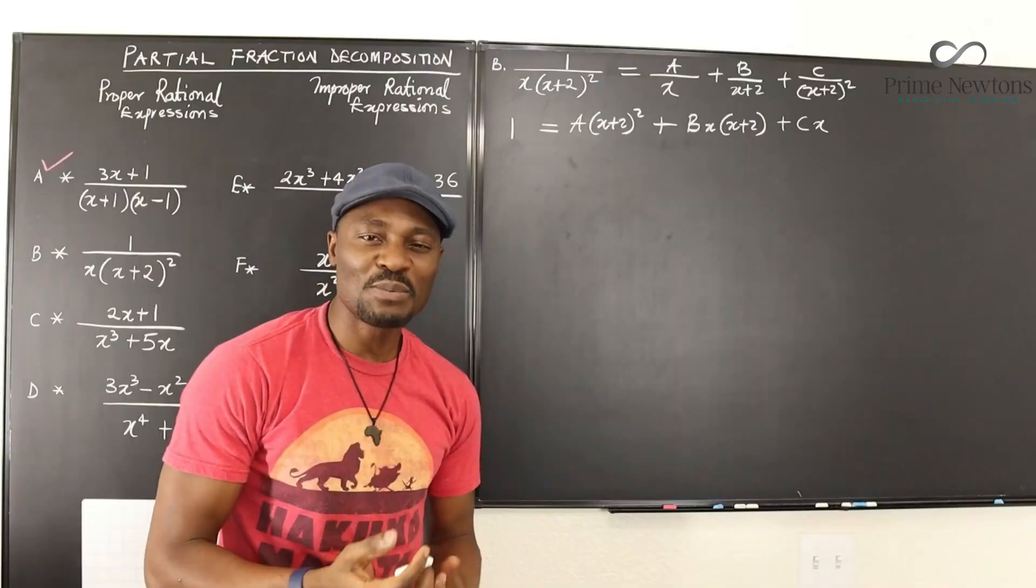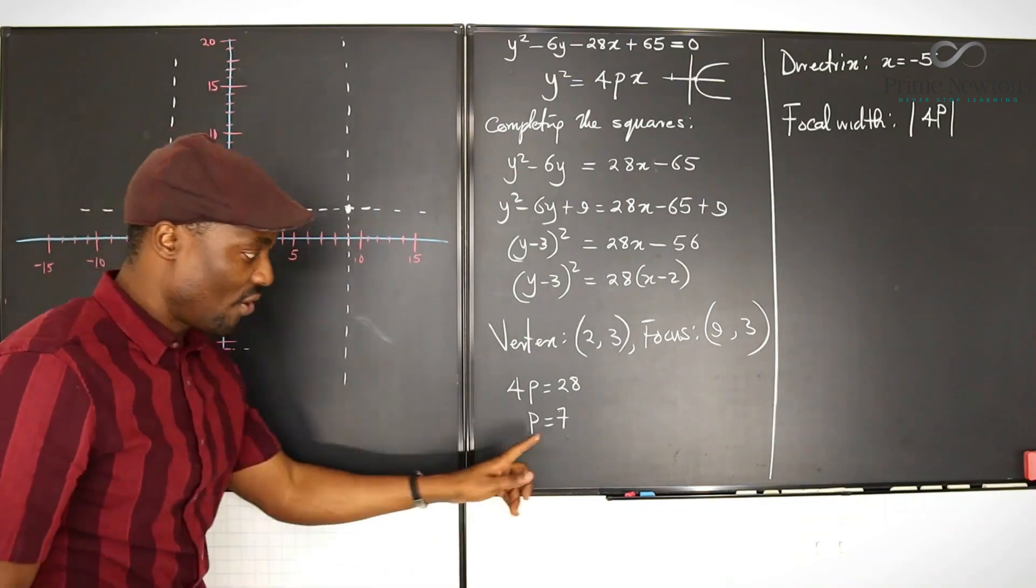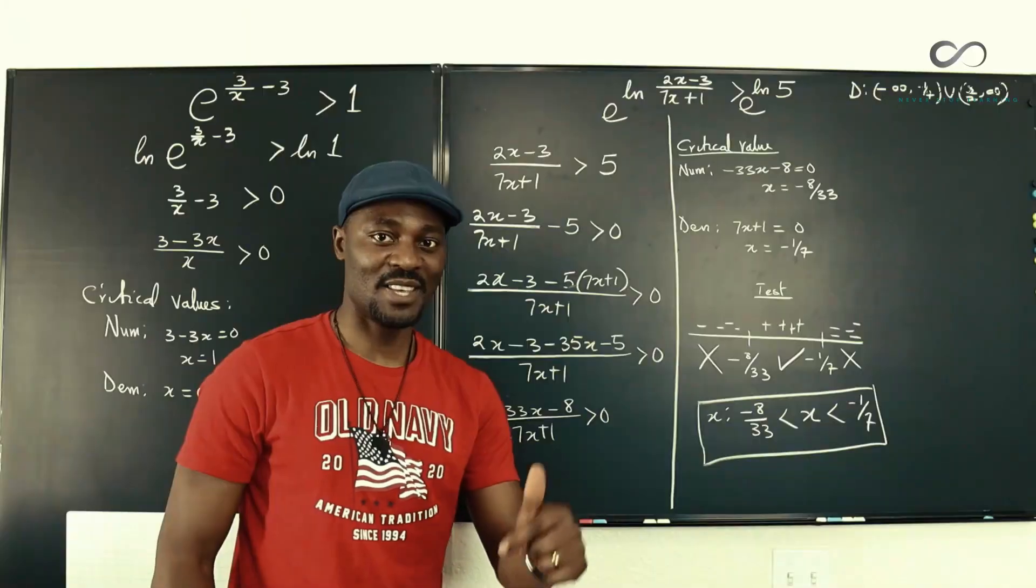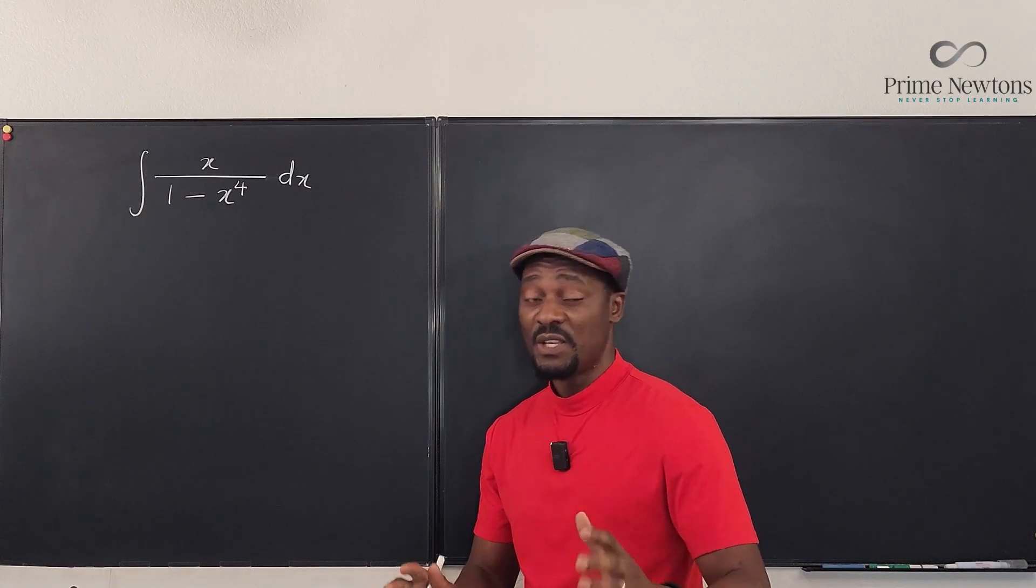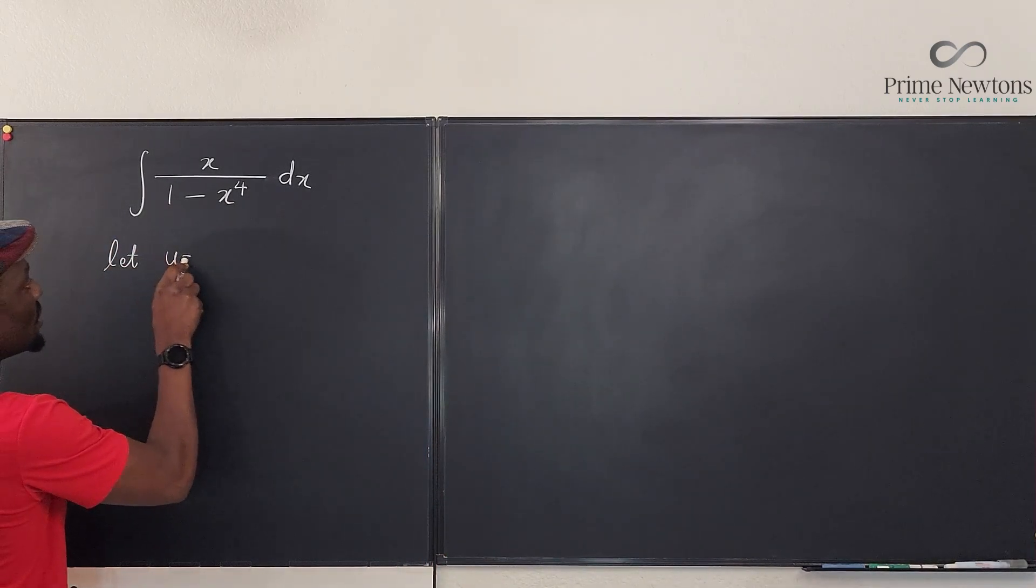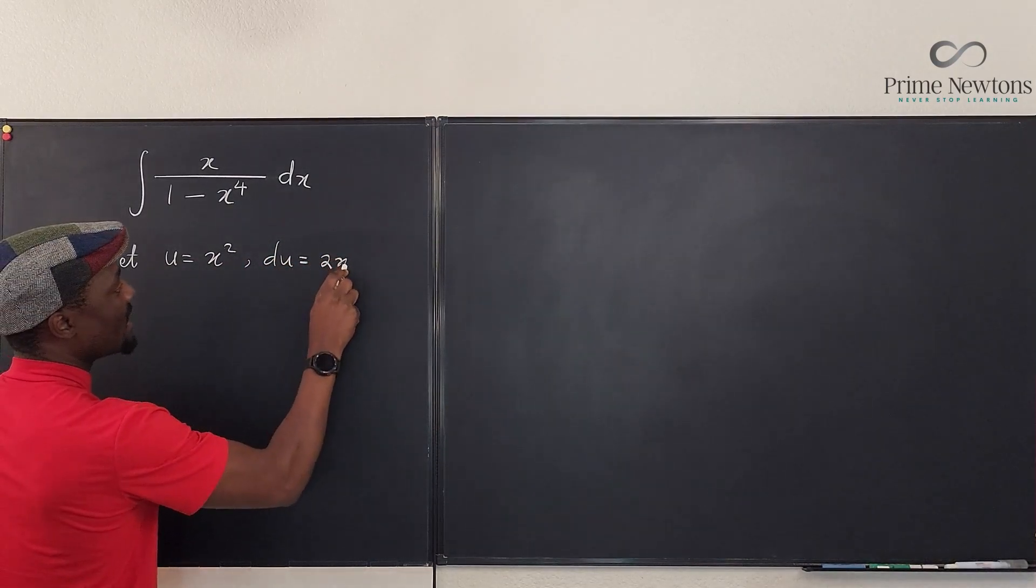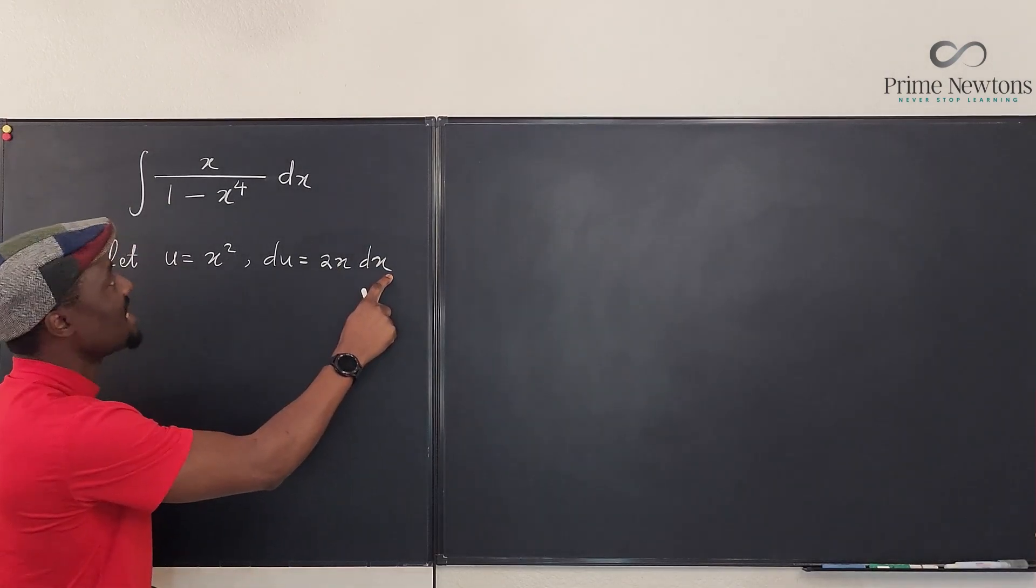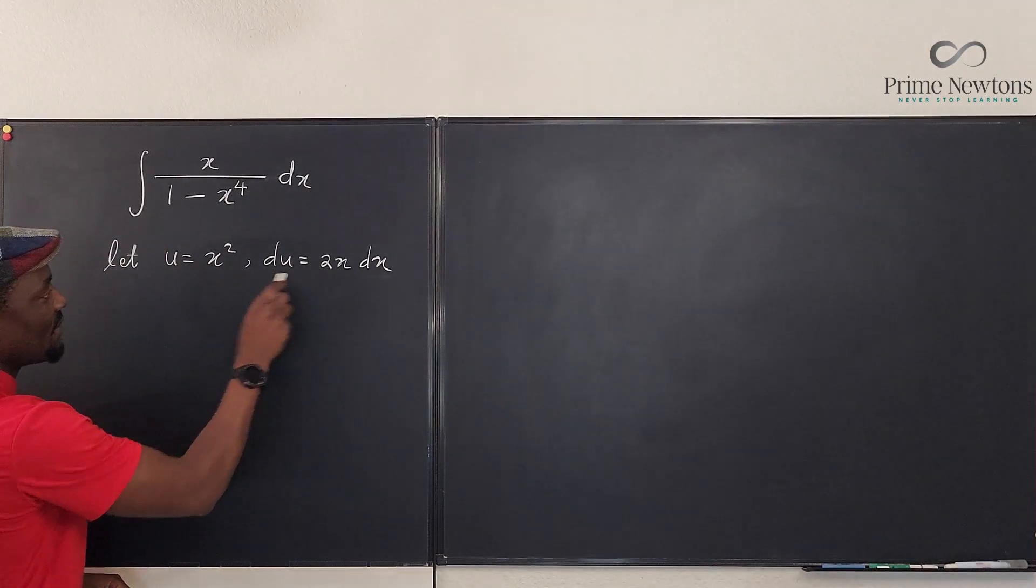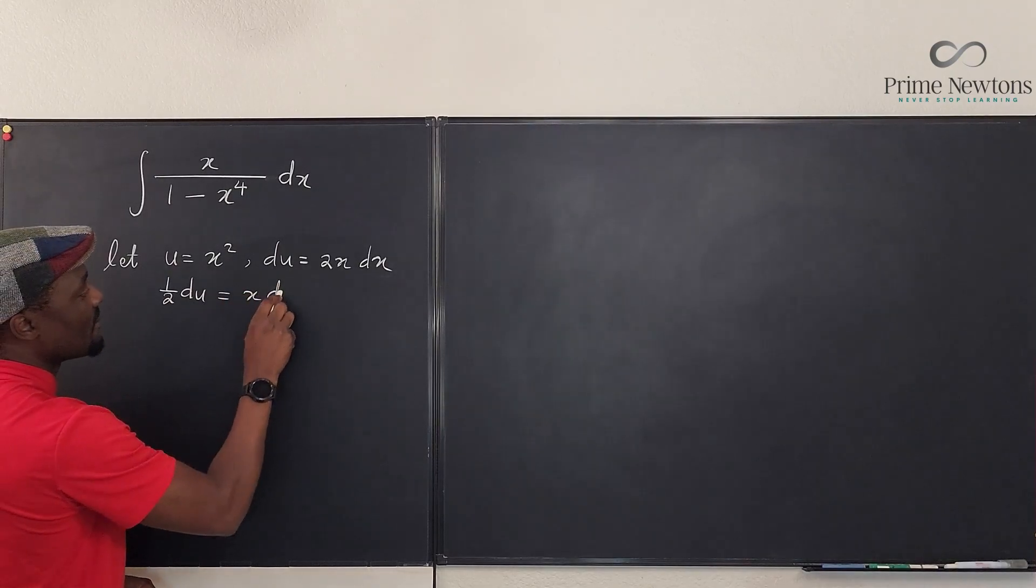Let's get into the video. So we're going to say let u be equal to x². So we know that du is 2xdx and you can see we already have the xdx which is what we're looking for. Let's isolate xdx. It tells us that if you divide both sides by 2, you have ½du will be equal to xdx.